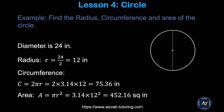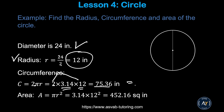Let's apply the formula to a problem. This circle has a diameter of 24 inches, so the radius is 24 divided by 2, which is 12 inches. The circumference equals 2 times 3.14 times 12, giving 75.36. If they ask in terms of pi, that is 24 pi. The area equals pi times r squared — 3.14 times 12 squared — which also equals 144 pi. The form of the answer depends on what the test asks.